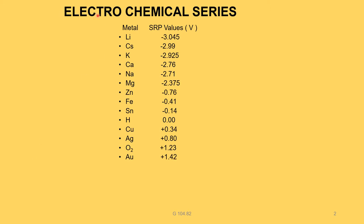This is the electrochemical series — the series in which metals or non-metals are arranged in increasing order of their standard reduction potential values. Key values: lithium −3.0405, cesium −2.99, potassium −2.925, calcium −2.76, sodium −2.71, magnesium −2.375, zinc −0.76, iron −0.41, tin −0.14, hydrogen 0, copper +0.34, silver +0.80, oxygen +1.123, gold +1.42.